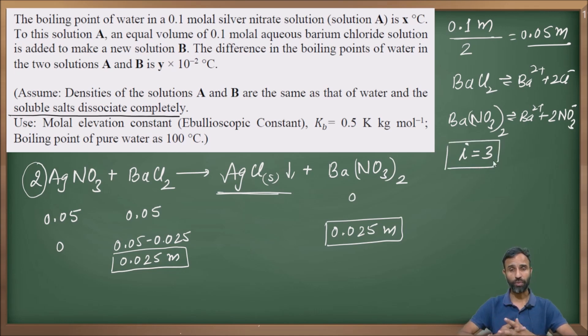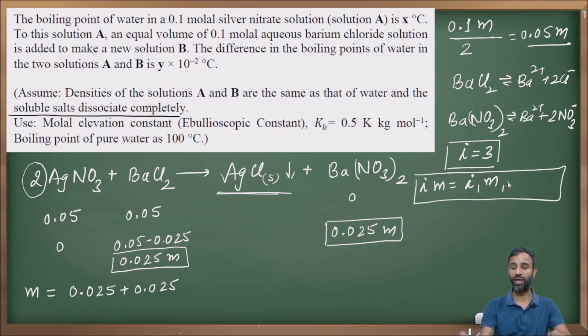Colligative property depends on the solute particle, number of solute particles. So total number of solute particles is 0.025 mol per kg barium chloride, 0.025 mol per kg barium nitrate. From here, molality of the solution - why I add both? Because i is same for both. Otherwise, to calculate molality, I will write it as i1 into m. To calculate it, it becomes i1 m1 plus i2 m2. But because i is same, molality is simply m1 plus m2. So it becomes 0.05. Means our solution is 0.05 molal as a whole.